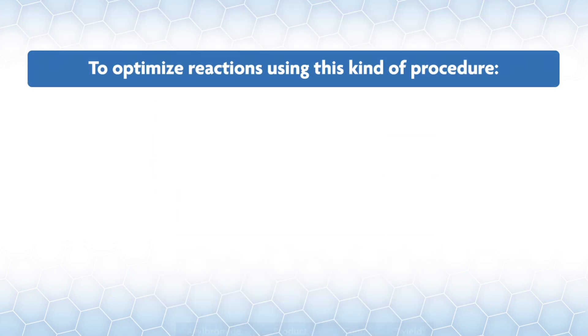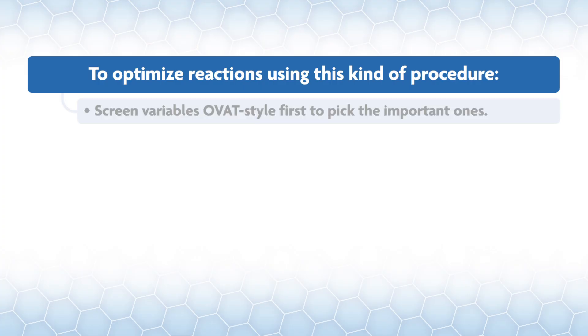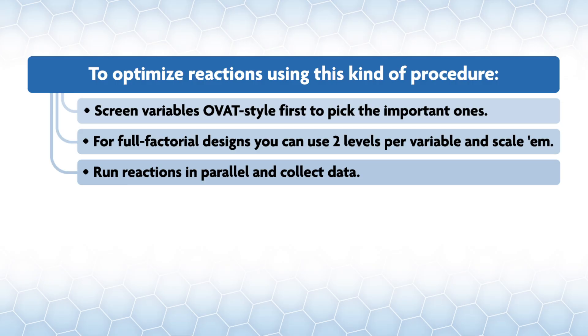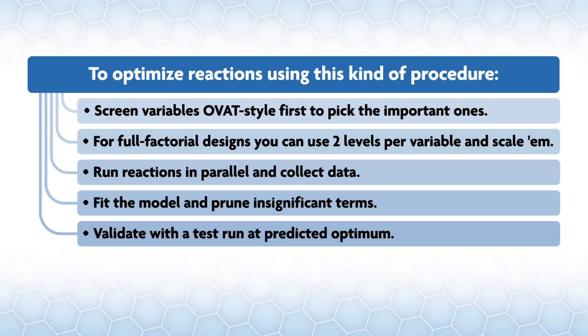In summary, to optimize reactions using this kind of procedure, screen variables OVAT style first to pick the important ones, the full factorial designs, you can use two levels per variable and scale them, run reactions in parallel and collect data, fit the model and prune insignificant terms, validate with a test run at the predicted optimum, and then win its synthesis.